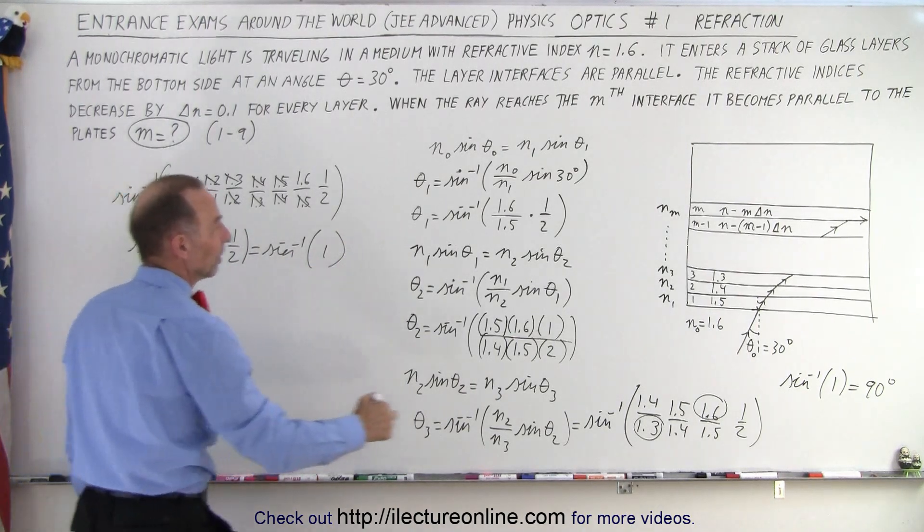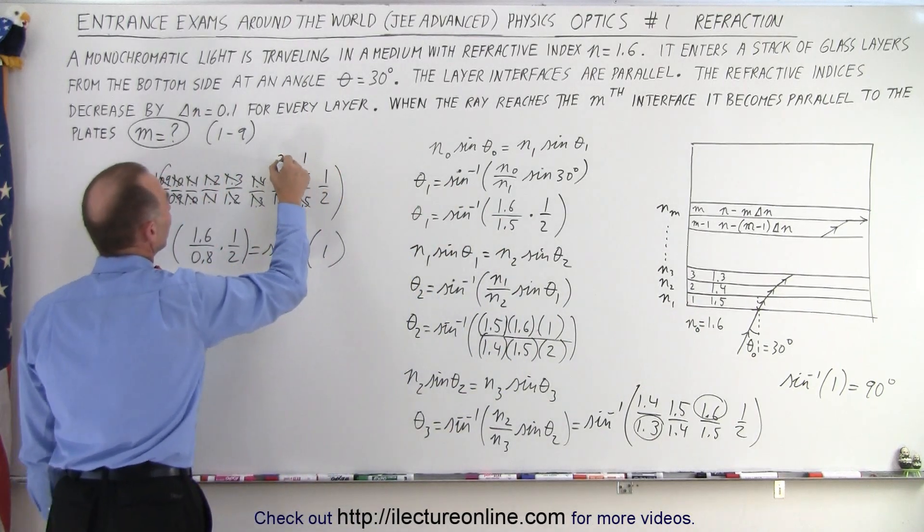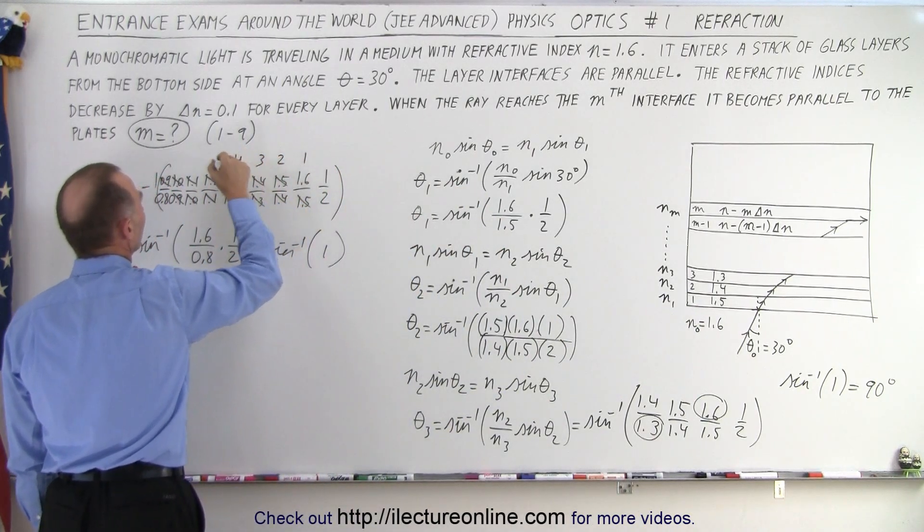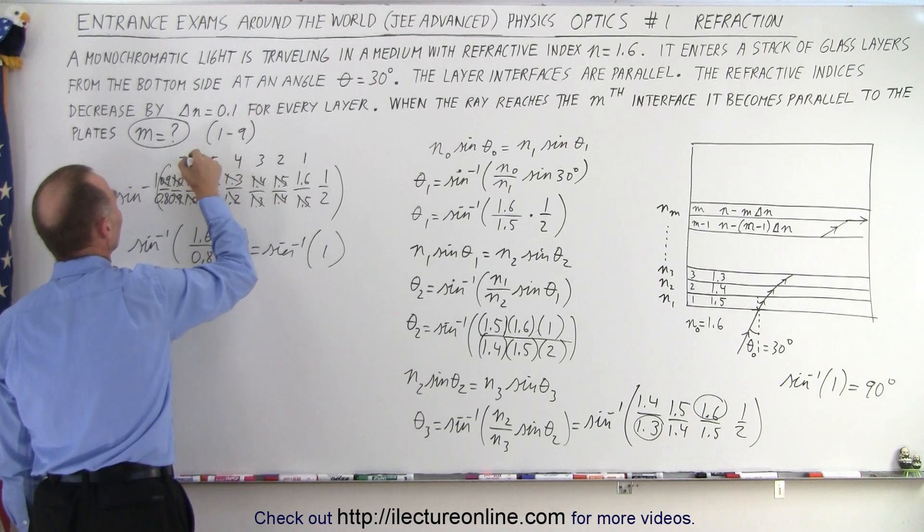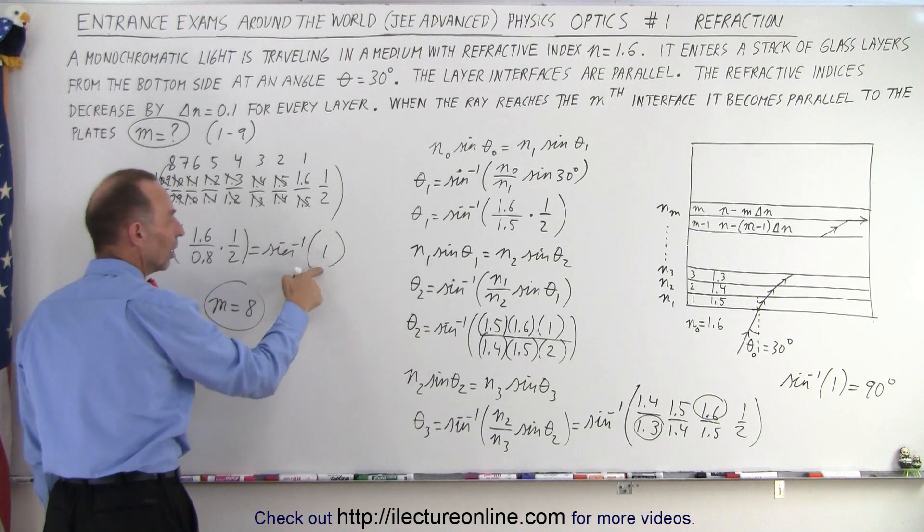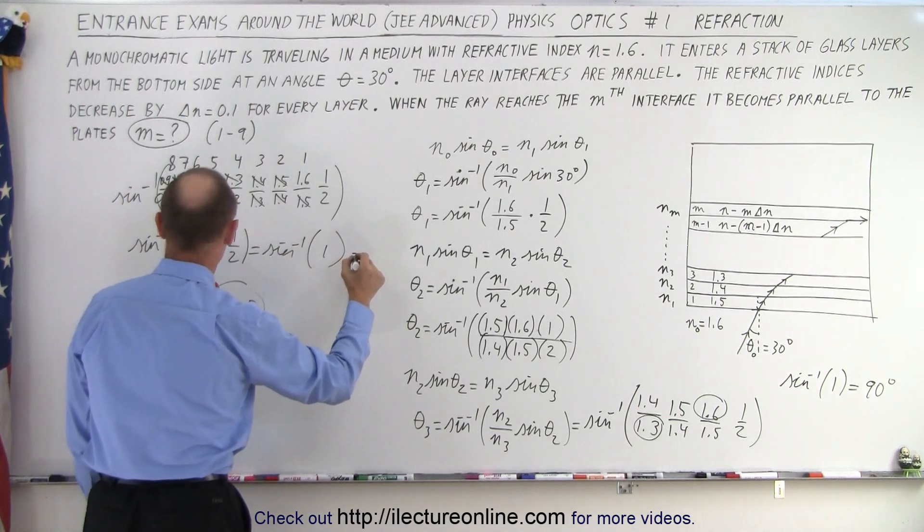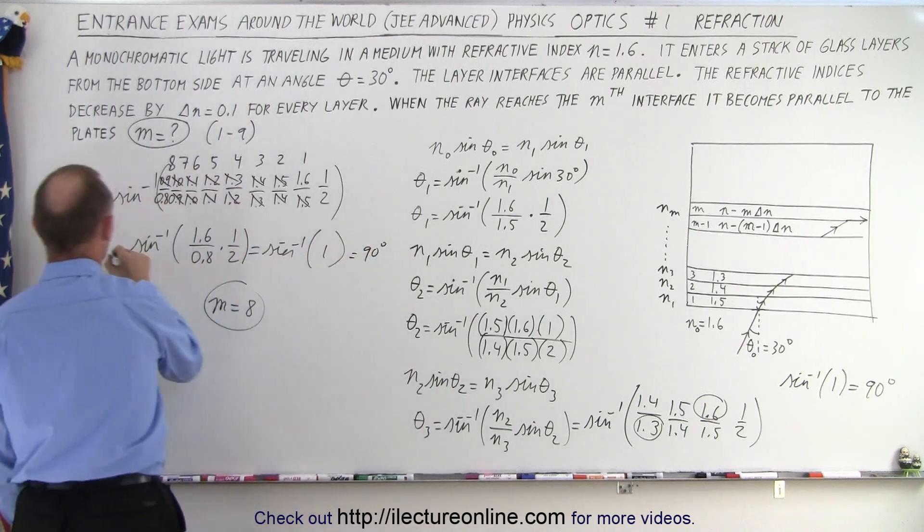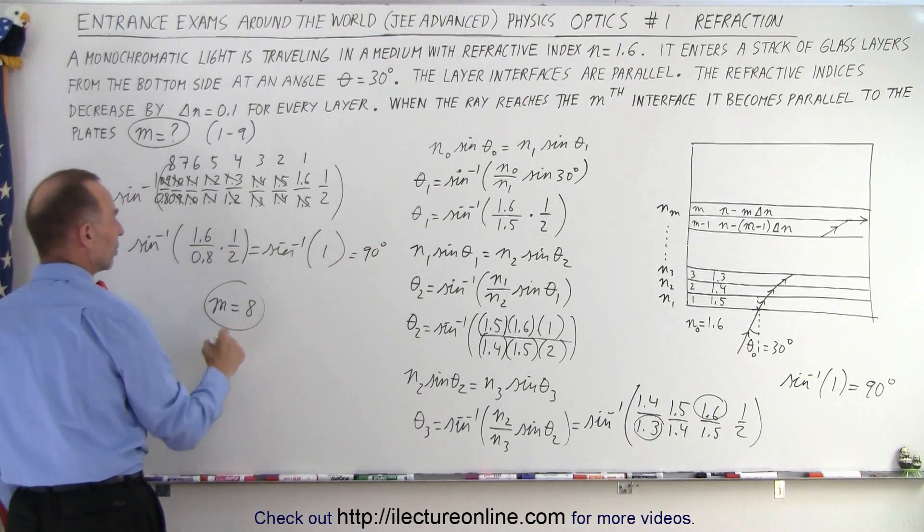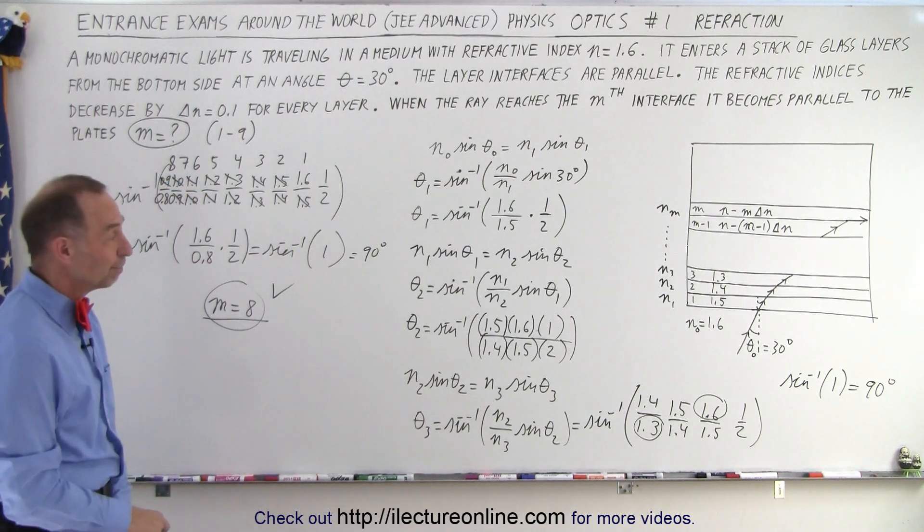So how many layers do I have? The first boundary is the first layer, so that's m equals 1, m equals 2, 3, 4, 5, 6, 7, and 8. So when m equals 8, I end up with an angle of 90 degrees. That's the angle theta equals 90 degrees when m equals 8, and that happens to be the correct answer for that problem.